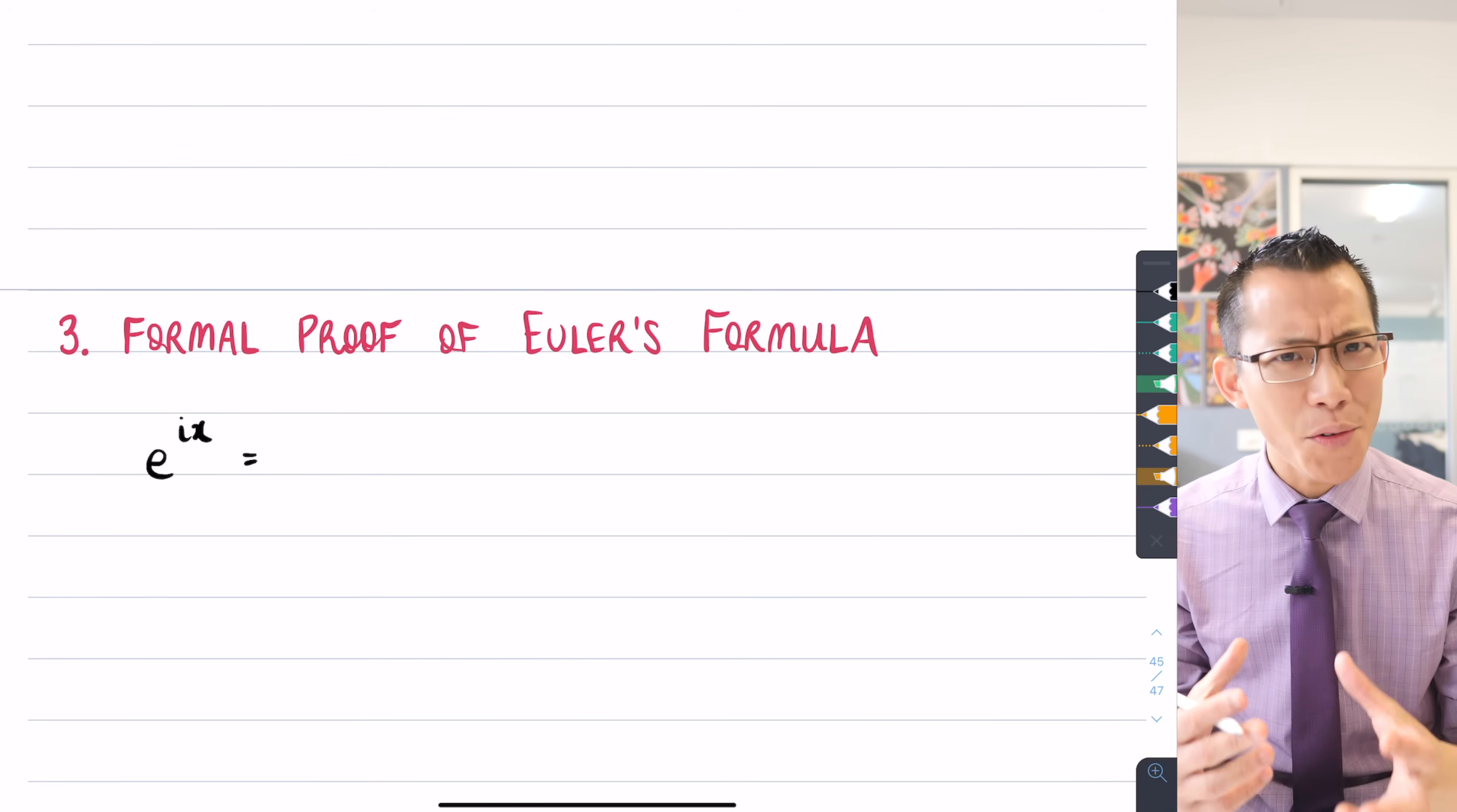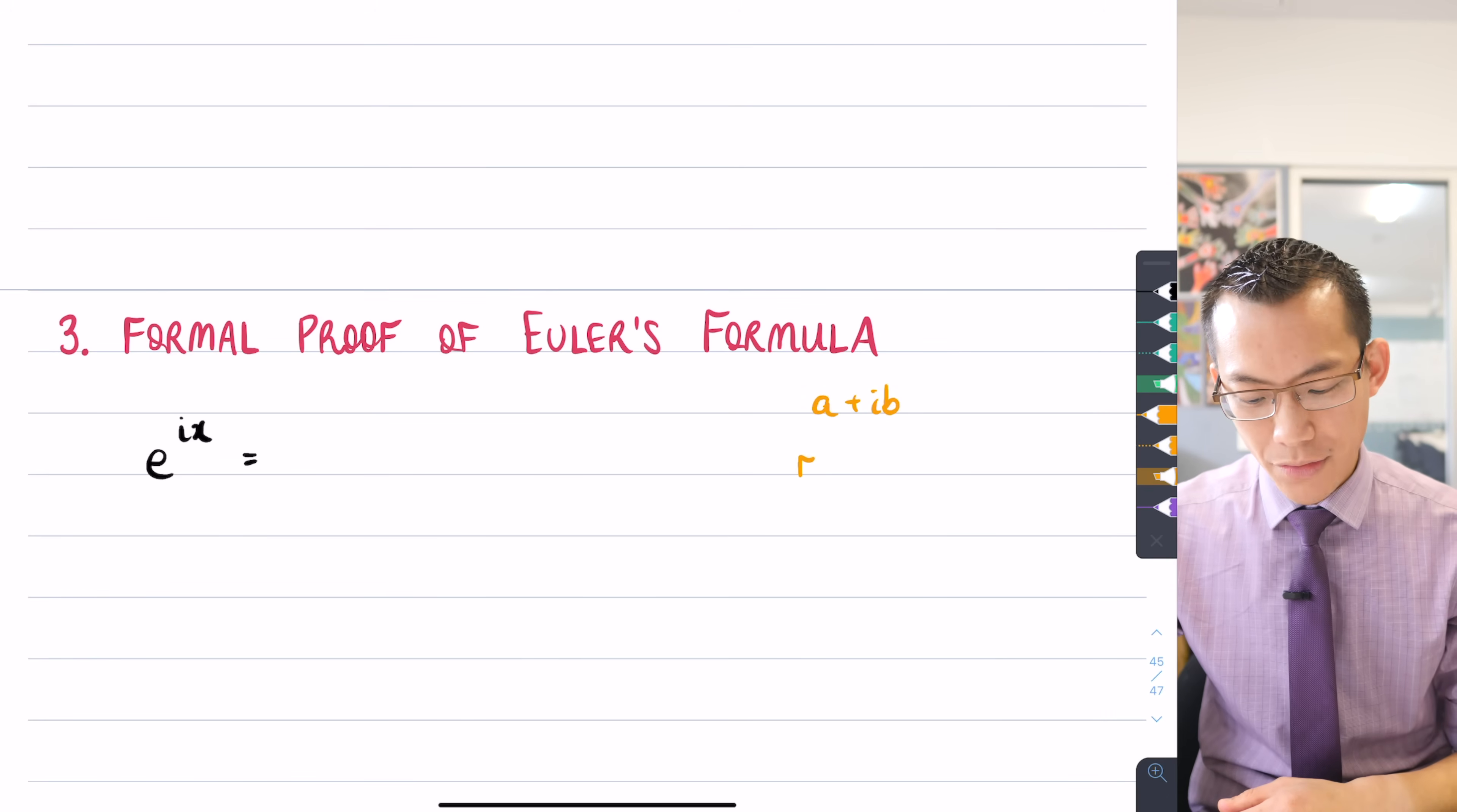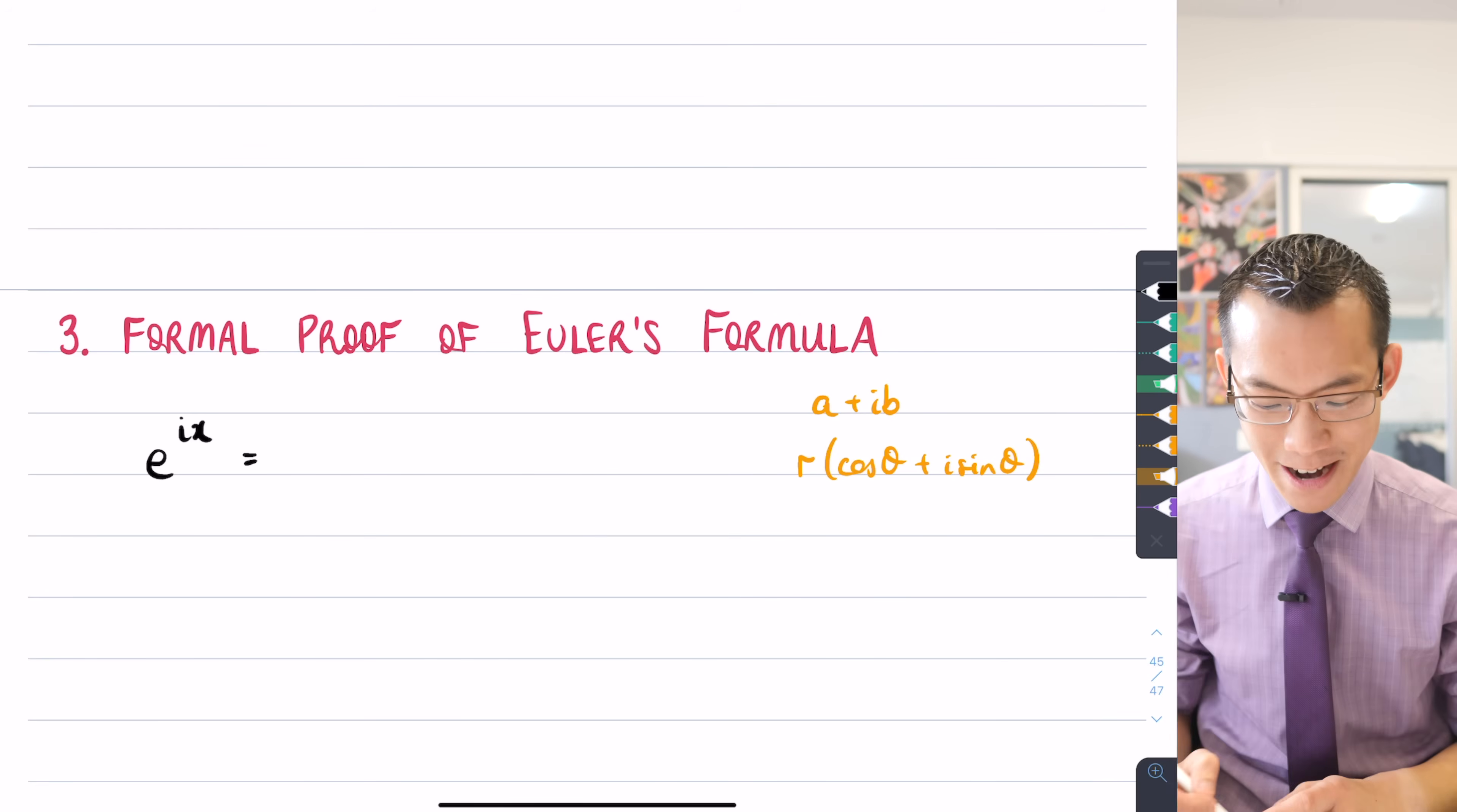Now we've got a couple of different ways to write complex numbers at this point. We could write it in rectangular form or we could write it in what we would call mod arg or polar form, using these trigonometric equations.